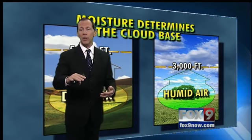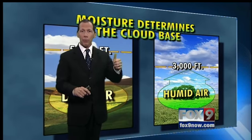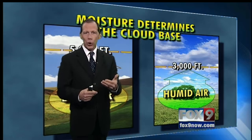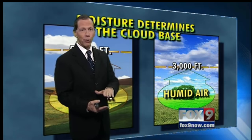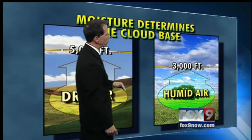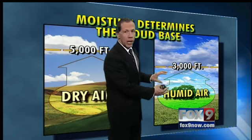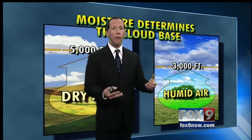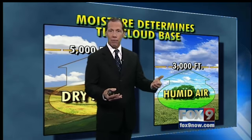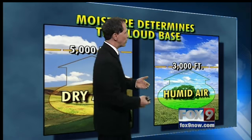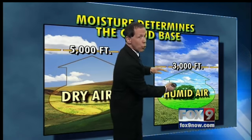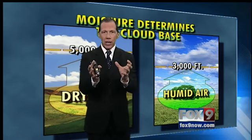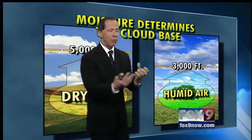Moisture determines how high up the clouds form. Did you notice how when it's been cold and snowy in the wintertime, the bases of those clouds are hanging real, real low? When the air is very humid, it doesn't have to rise too far for it to cool and condense and make the clouds. You have to get air to rise — if you cool air, the moisture that's in the air will condense and form a cloud.